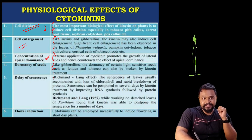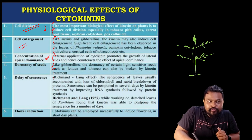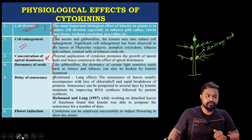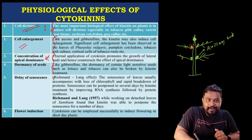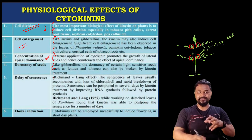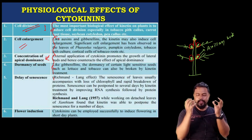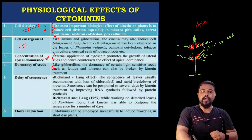When auxin is present, it suppresses axillary buds — side branches cannot grow. Auxin inhibits axillary bud growth. This is apical dominance — the apical bud is dominant. Cytokinin promotes axillary bud growth, overcoming apical dominance.